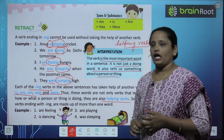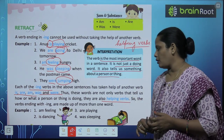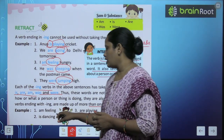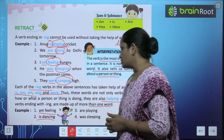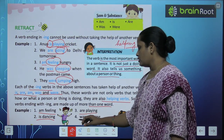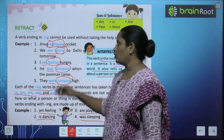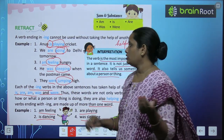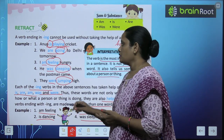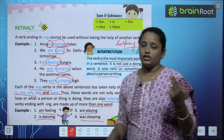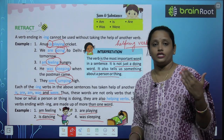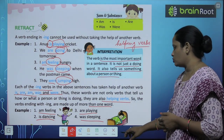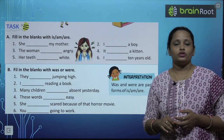So the verbs ending with -ing are made up of more than one word. For example: I am feeling, is dancing, are playing, was sleeping. So children, as you all know: 'is' is used with a singular noun, 'are' is used with a plural noun, and 'am' is used with 'I'. Similarly, 'was' is used with a singular noun for past, and 'were' is used with a plural noun for past. Now let's do exercises A and B.